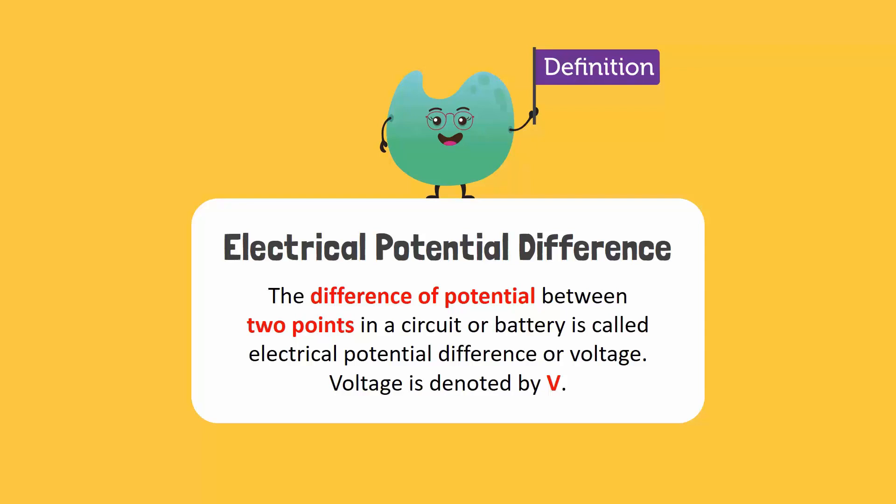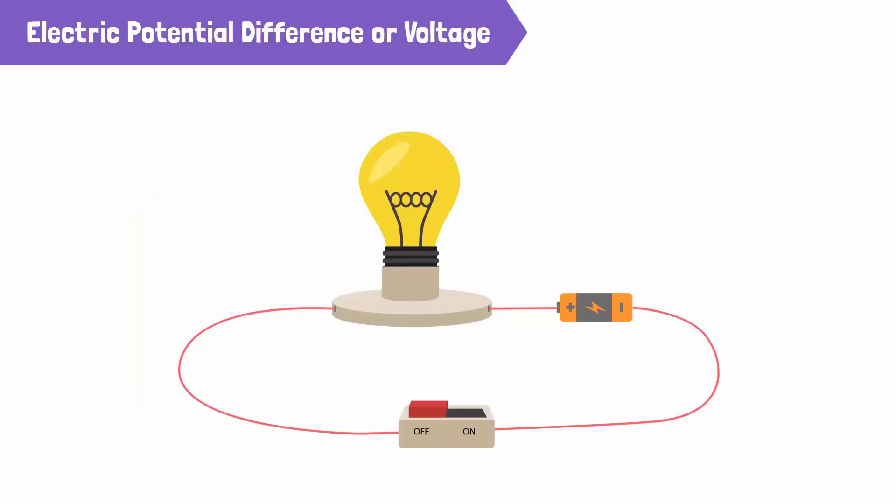Voltage is denoted by V. This potential difference causes the electrons to move through the wire. Here, the two points refer to the positive and negative terminals of the battery.